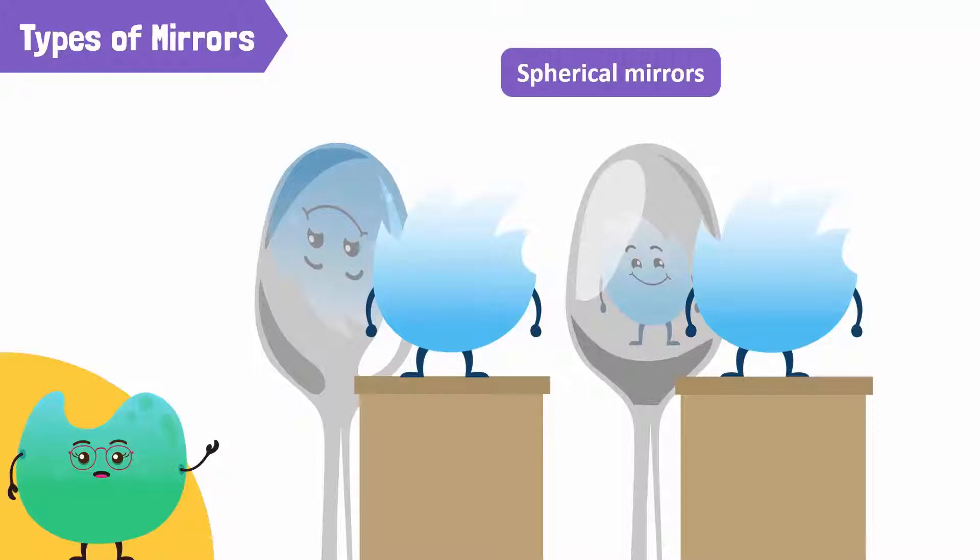A mirror that curves inwards or away from you is called a concave mirror. On the other hand, a mirror that bulges outward or towards you is called a convex mirror.